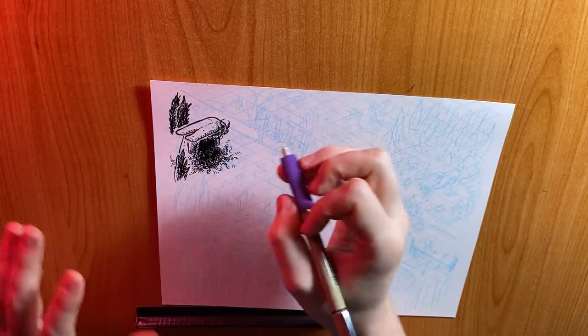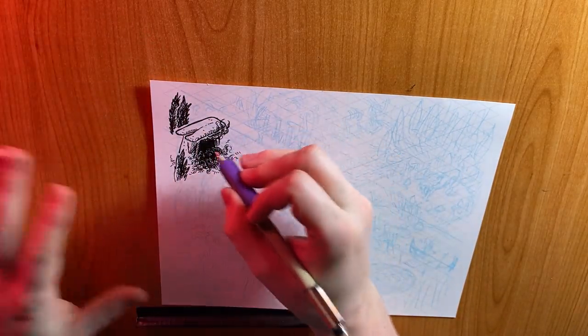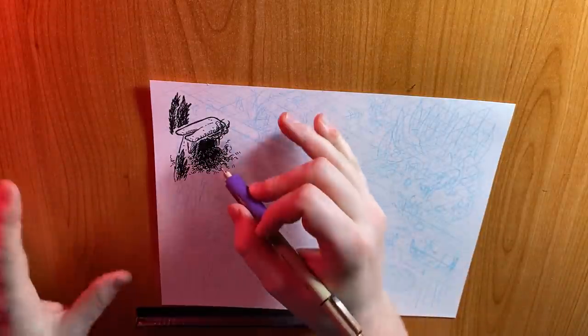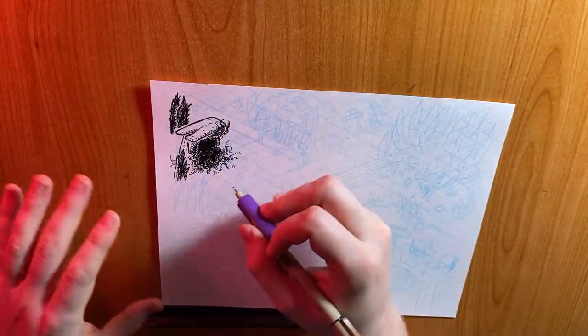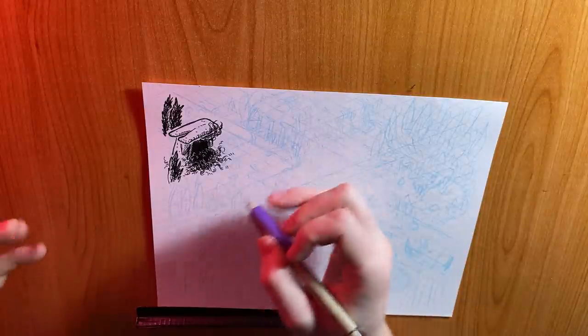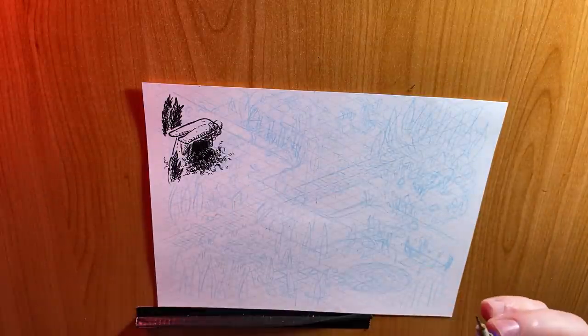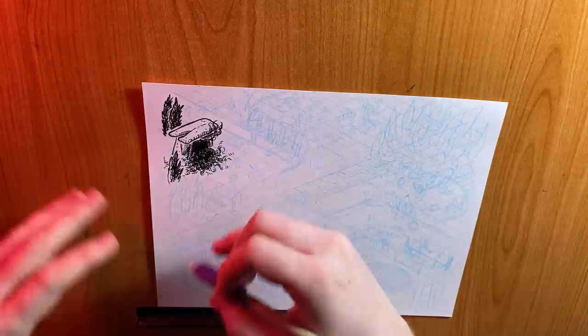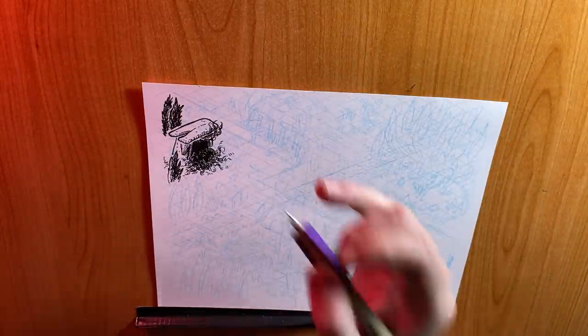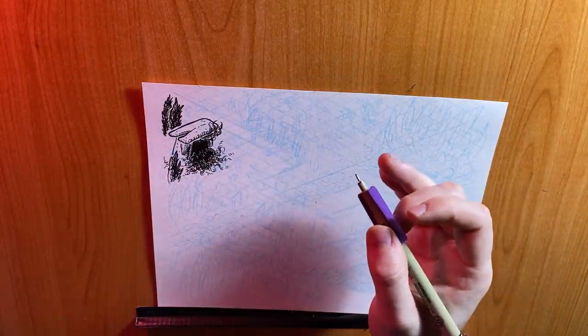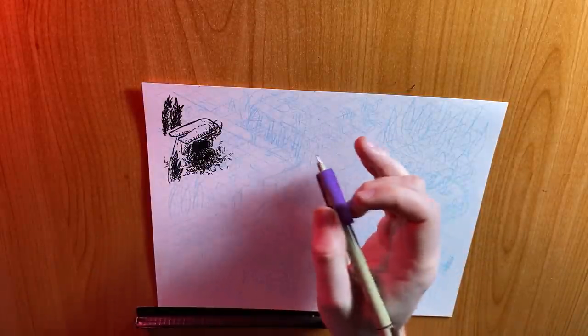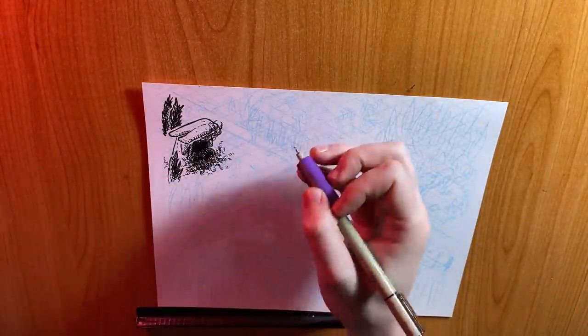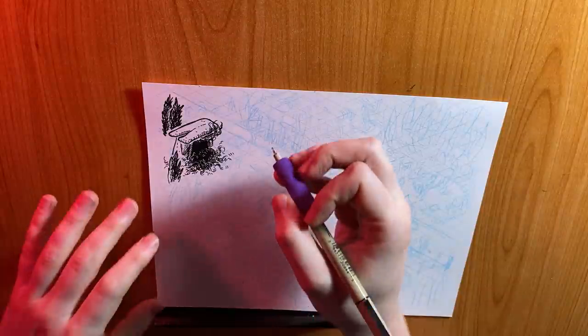It's very easy to get discouraged and stressed out and anxious when you are inking a page and there's no undo button. But don't be intimidated. Just keep pushing through. And if you notice that you keep overworking something because you're not happy with it, step away from it a little bit and probably just solve it by blacking it out and really making sure that those values are clear.